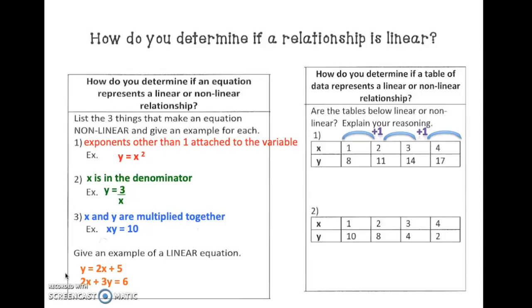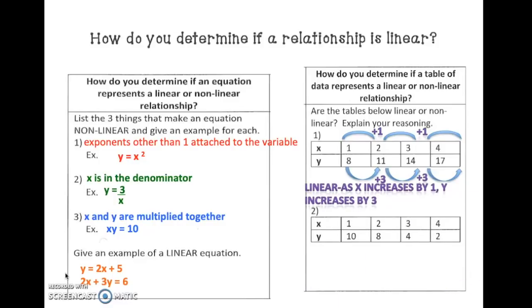Now let's take a look at the y values. We have 8, 11, 14, and 17. From 8 to 11, we are adding 3. From 11 to 14, we are adding 3. As x increases by 1, y is increasing by 3. So we can safely say this is a linear relationship.